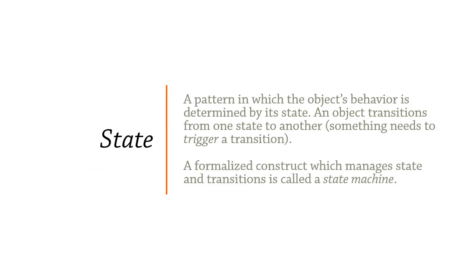The State design pattern is simply a pattern where the object's behavior is determined by its state. The behavior the object can perform depends on that state. There's also the paradigm of an object transitioning from one state to another — for example, a phone moving from the off-hook stage to the dialing stage — called a transition. Transitions are triggered by events, called triggers. The formalized construct managing state and transitions is called a state machine, typically a class you build yourself or take from an external library.